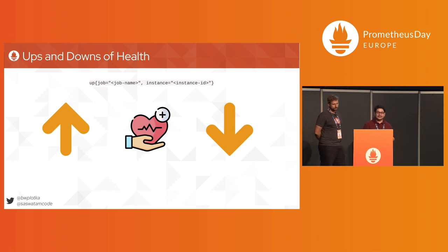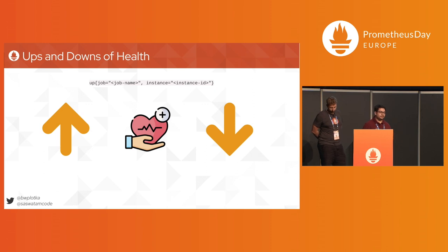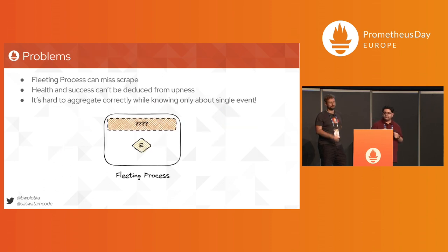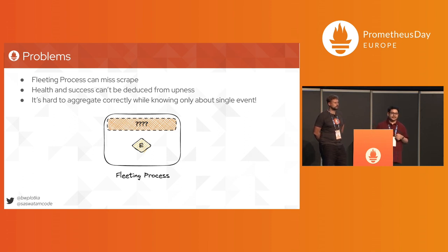Just like Wilbur — who was a fleeting process but got knocked out — we cannot know how many duels he had or how many he won. Prometheus, in a typical setup, also has the built-in capability for monitoring the health of discovered targets by generating a dedicated time series called 'up' with job and instance labels. On each scrape, it appends a sample with a value of 1 if the instance was reachable, or 0 if the scrape fails. That is not possible with fleeting processes. So to summarize, we have three major problems: fleeting processes can miss Prometheus scrapes completely or partially; health and success can't be deduced from upness alone; and it's hard to aggregate data correctly when you're only aware of a single event.